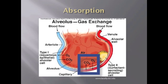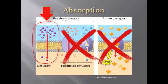Alveolar membranes in the lungs do not have many transporters, as they are designed to accommodate the simple diffusion of oxygen and carbon dioxide. As an inhaled toxin, chloroform mainly relies on simple diffusion for absorption through the alveolar membrane of the lungs' alveoli.